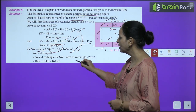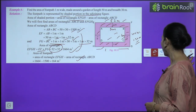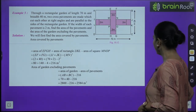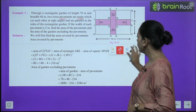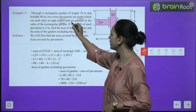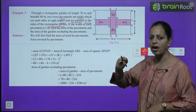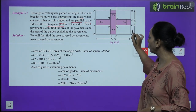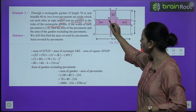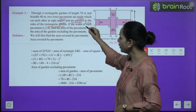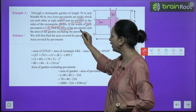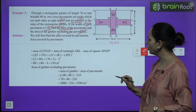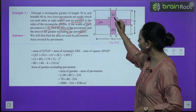Example 5: Through a rectangular garden of length 70 m and breadth 40 m, two cross paths are made, each 2 m wide, one parallel to the length and one parallel to the breadth, cutting each other at right angles.